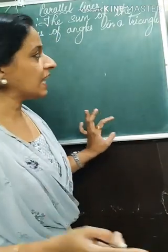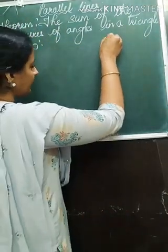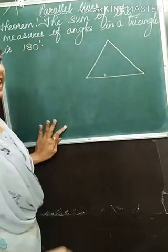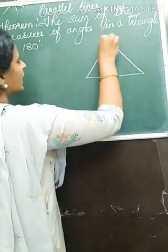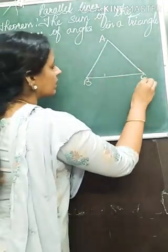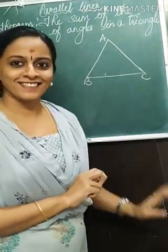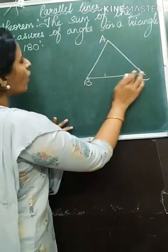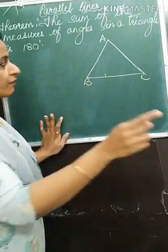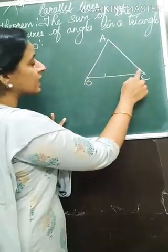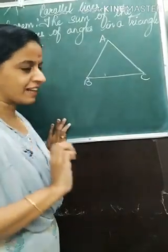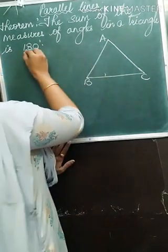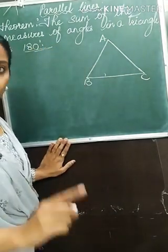Take your pencil and scale and draw a triangle. We will give this triangle a name — triangle ABC. Every common man's triangle looks like this. We have to prove that the sum of angles in a triangle — there are 3 angles — if you add these 3 angles you should get the final sum as 180 degrees.